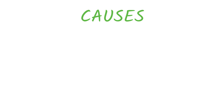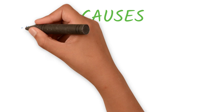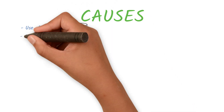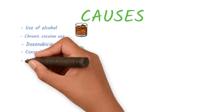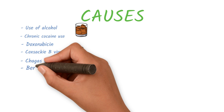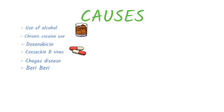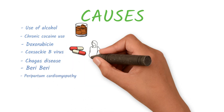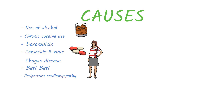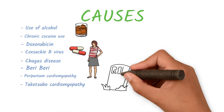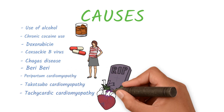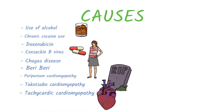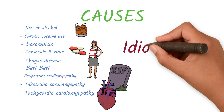Let's start with dilated cardiomyopathy. Dilated cardiomyopathy is a systolic dysfunction due to dilation of the heart chambers. The most important causes are use of alcohol, chronic cocaine use, drugs like doxorubicin, Coxsackievirus, Chagas disease, beriberi due to thiamine deficiency, peripartum cardiomyopathy which occurs during pregnancy, and Takotsubo cardiomyopathy resulting from loss of a loved one or trauma.